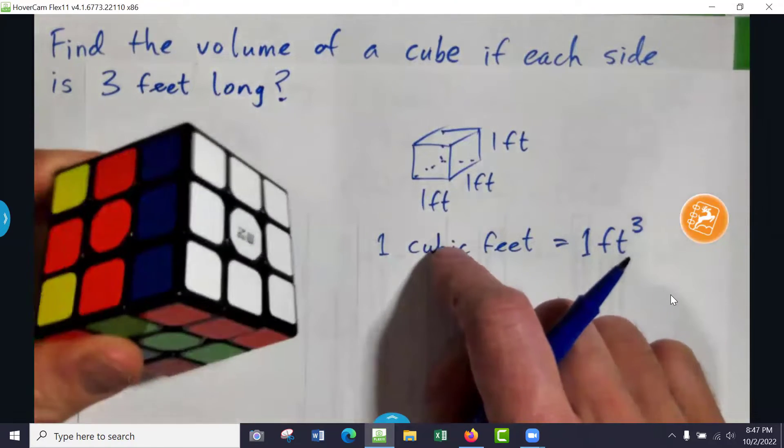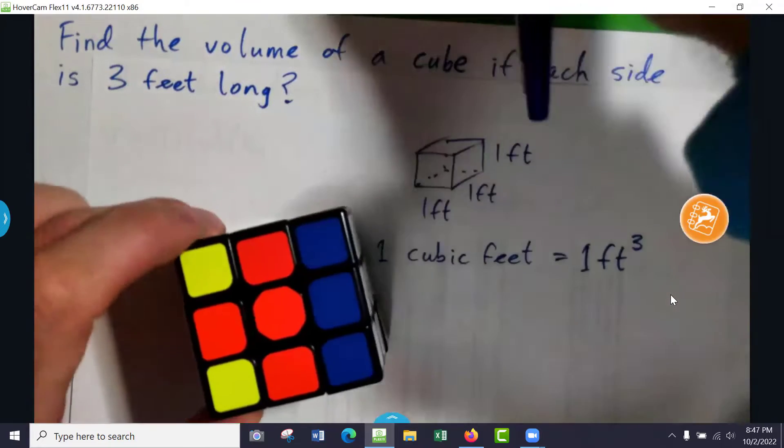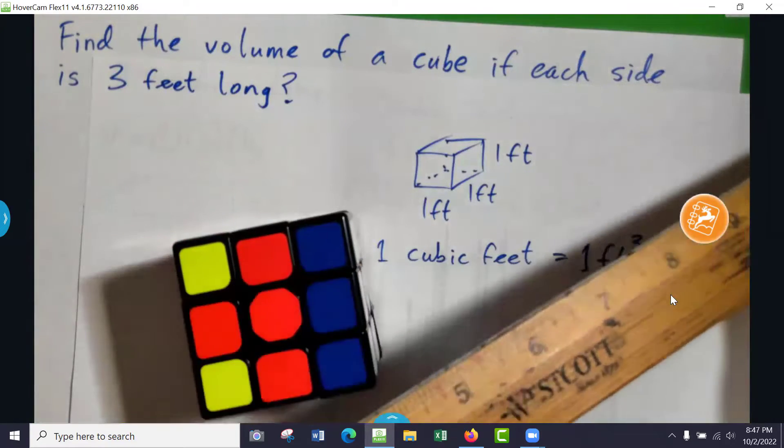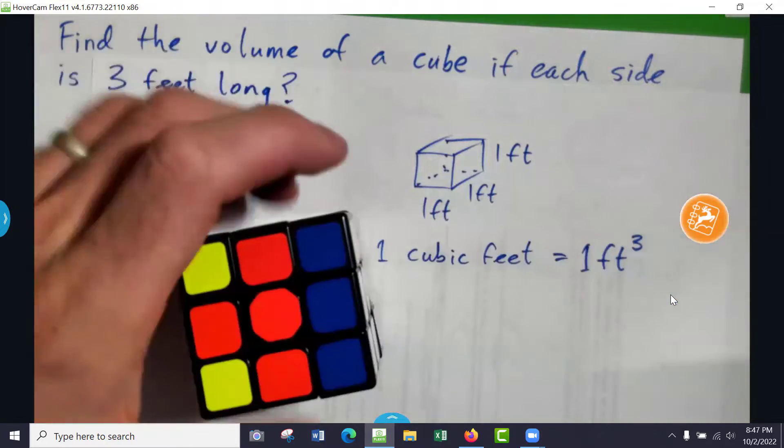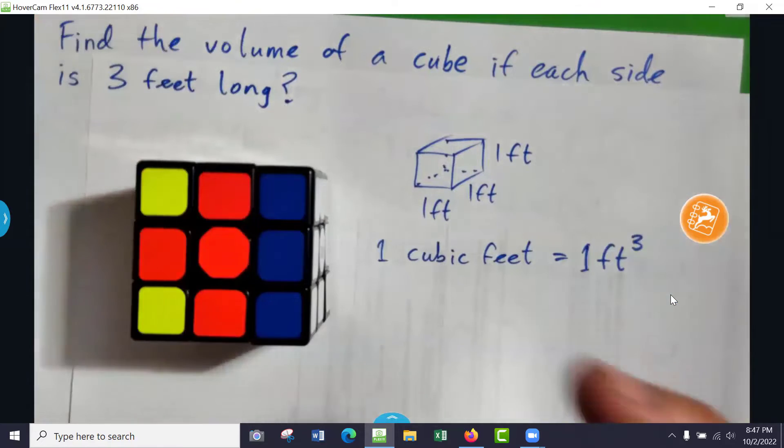The question is, if we have something like a Rubik's cube, and this is not 1ft long, obviously, because 1ft is actually 12 inches, which is the length of this whole ruler. This is definitely not 3ft long, 3ft wide, 3ft high, but just imagine it was.